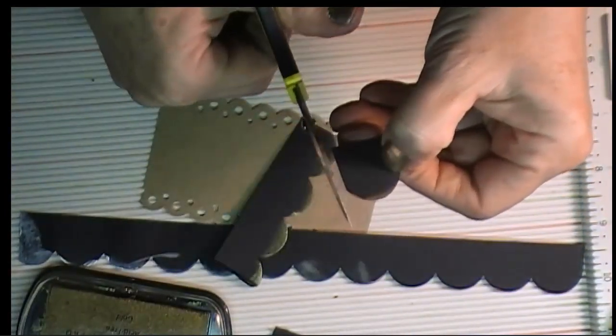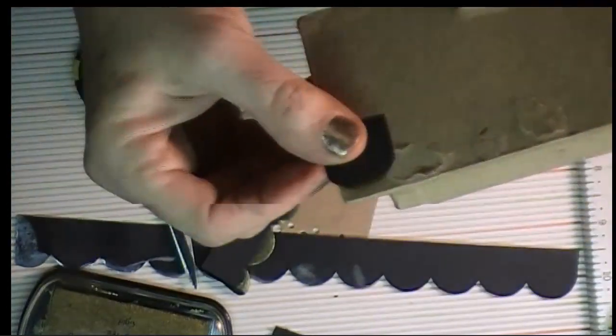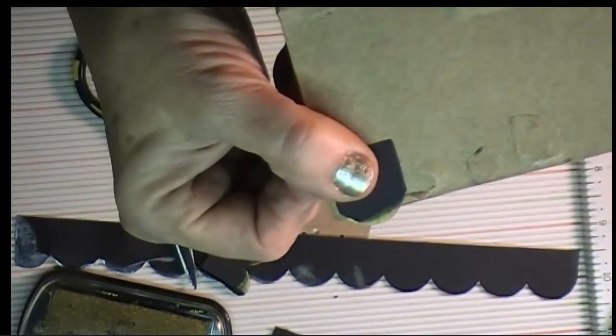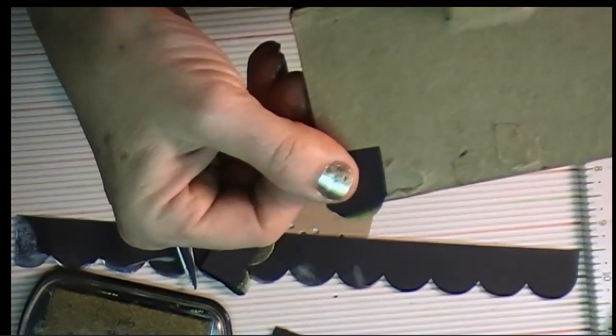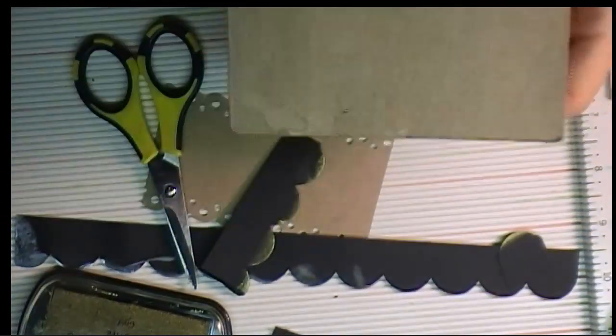You could use your die cutting machine to cut out single shingles yourself rather than punch them with a manual punch, or you could even buy balsa wood shingles at Hobby Lobby.